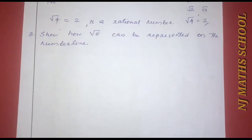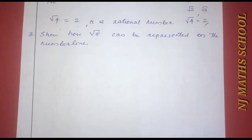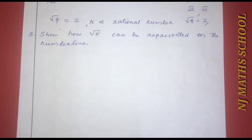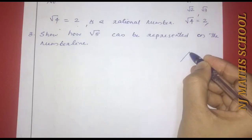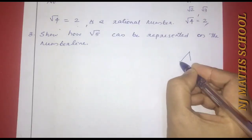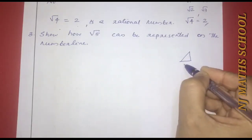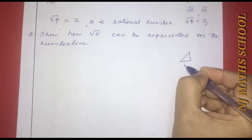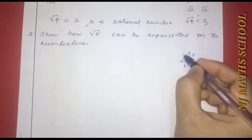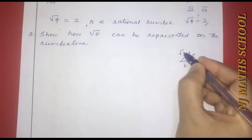Third question: show how √5 can be represented on the number line. In a previous class, we located √2 and √3 on the number line. Now we will locate √5. We draw a right-angle triangle using base and perpendicular, with √2 and √3 as components, giving hypotenuse √5.